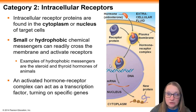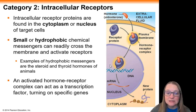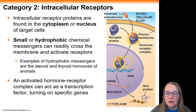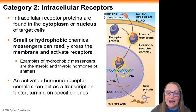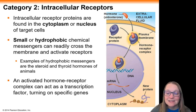Transcription factors are components that can help to turn on the expression of specific genes. So in this example, you're having the aldosterone hormone complex go into the nucleus and activate transcription of a particular mRNA, which ultimately will lead to the production of the protein that needs to be produced in response to the aldosterone hormone.